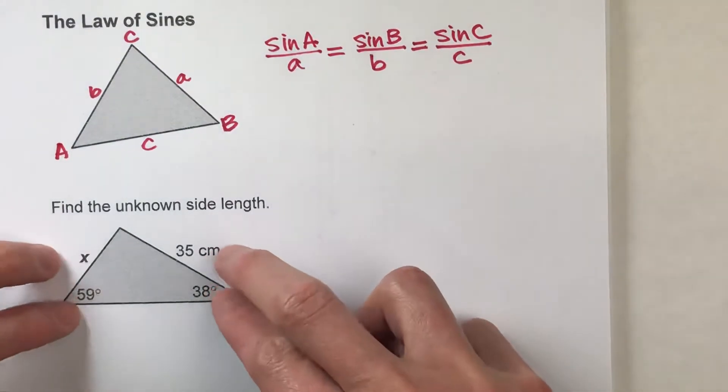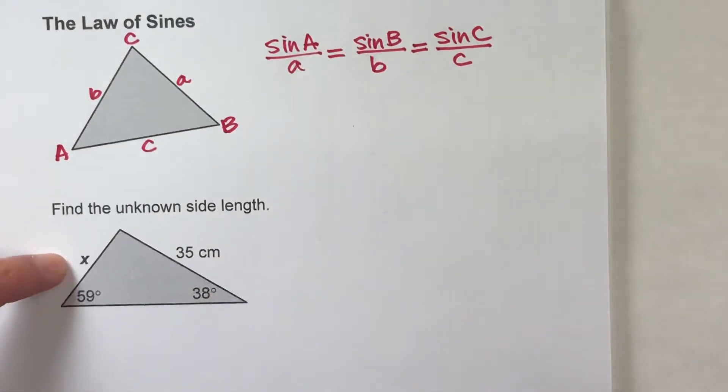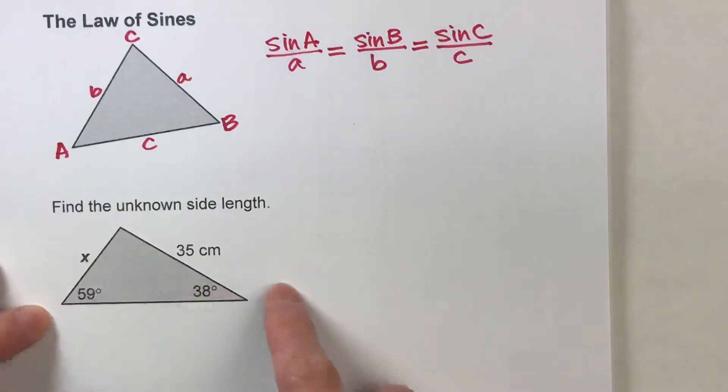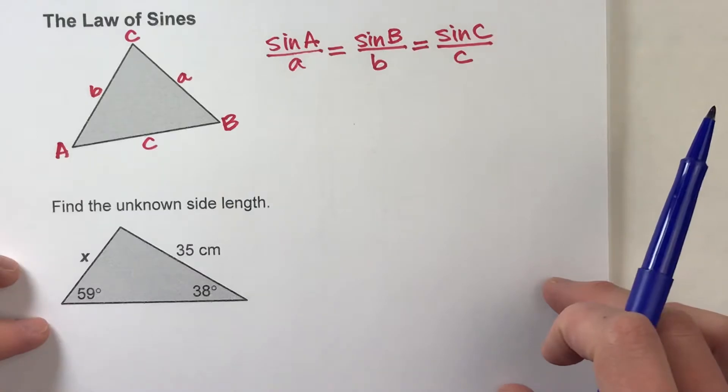So we're giving three pieces of information and we're trying to find the fourth, which is perfect for the law of sines. And also notice this isn't a right triangle, so we can still do the law of sines even though it's not a right triangle.